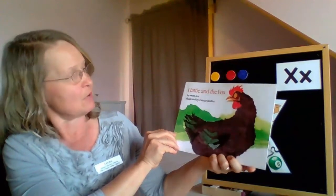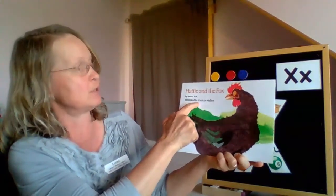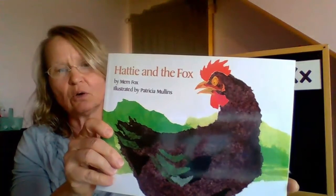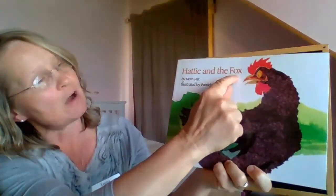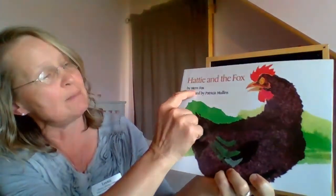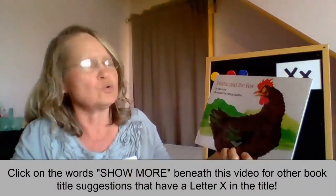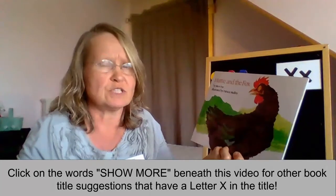Now, for story time, there's a book called Hattie and the Fox. And it's written by Mem Fox and illustrated by Patricia Mullins. Can you see letter X's in the title or in the author's name? Mem Fox. You see that one? Fox. And there's the author's name, Mem Fox. Now, Hattie, she's a hen who sees something that she thinks might be dangerous, and she's trying to tell her friends, but they don't seem to want to pay attention to her. It's a great story.